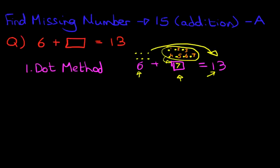That is how we use the dot method. First, look at the answer at the end, the 13. Look at how many dots we already have, 6. And then count from 6 to 13, putting the dots above the square box. It's as simple as that. So that's the first method.